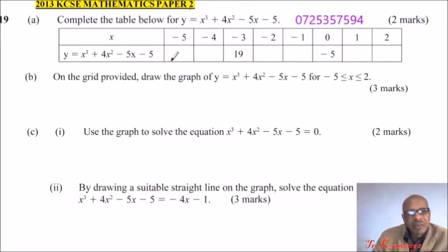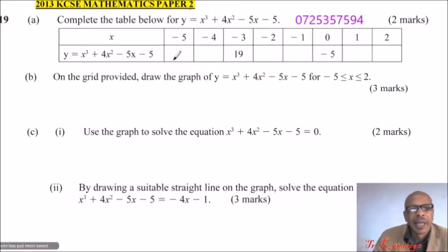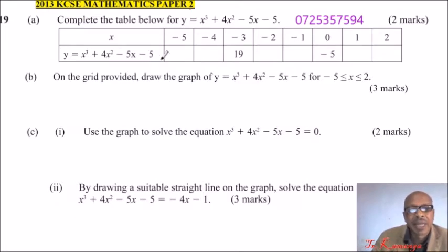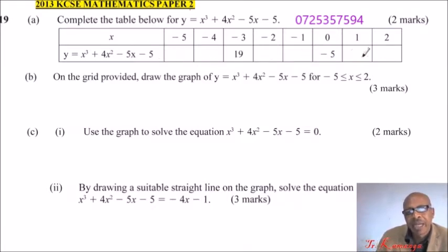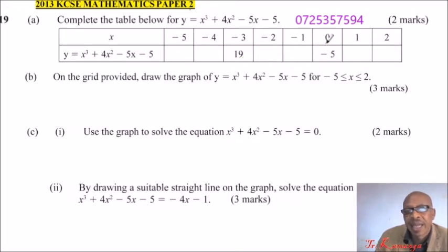This topic was covered in form 3, further graphical methods. We have been given a table with values of x and the function y equals x cubed plus 4x squared minus 5x minus 5. You are supposed to fill the missing gaps. When x is minus 3, y is given as 19. When x is 0, y is minus 5.